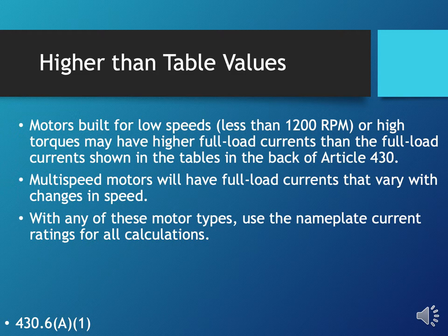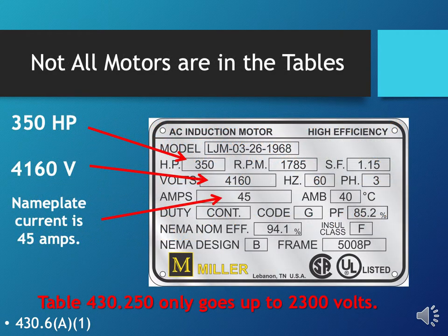Motors built for low speed — less than 1,200 RPM — or high torques may have higher full load currents than those shown in the tables. Multi-speed motors will have full load currents that vary with changes in speed. For any of these motor types, use the nameplate current rating in all calculations. Similarly, if the motor is not listed in the tables in the back of Article 430, use the nameplate rating.